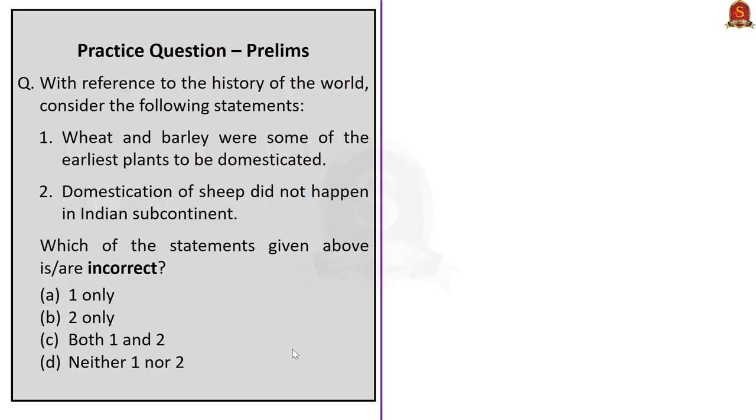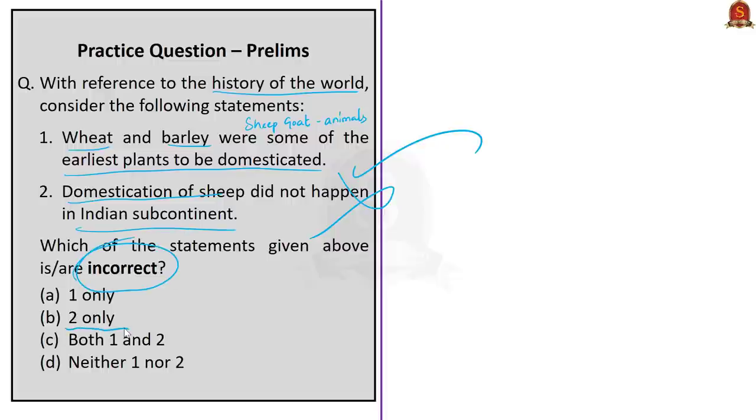Now look at this prelims practice question. With reference to the history of the world, consider the following statements: Statement 1, wheat and barley were some of the earliest plants to be domesticated. Statement 2, domestication of sheep did not happen in Indian subcontinent. As we saw in our discussion, wheat and barley were the earliest domesticated plants and sheep and goat were the earliest domesticated animals, so that makes the first statement correct. The second statement says domestication of sheep did not happen in Indian subcontinent. This is incorrect because recent research has shown that sheep domestication happened in the Indian subcontinent also. Since the question wants us to find only the incorrect statement, the correct answer will be option B, that is 2 only.